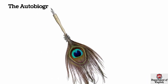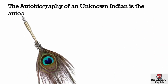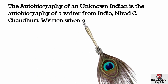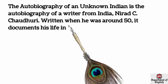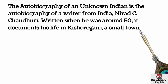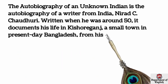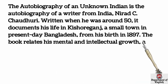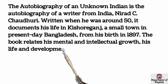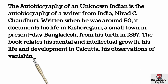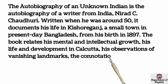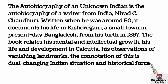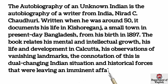The Autobiography of an Unknown Indian is the autobiography of Indian writer Nirad C. Chaudhary. Written when he was around 50, it documents his life in Kishoreganj, a small town in present-day Bangladesh, from his birth in 1897. The book relates his mental and intellectual growth, his life and development in Calcutta, his observations of vanishing landmarks, and the dual-changing Indian situation and historical forces surrounding Britain's imminent departure from India.